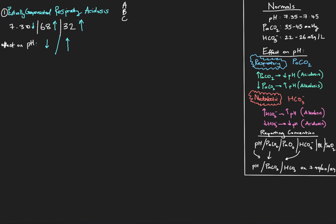This is a partially compensated respiratory acidosis. The reason it's partially compensated is that yes, there's been movement of the bicarb increasing outside of normal range, increasing the pH, trying to pull that pH back to normal — but it hasn't pulled it back all the way into a normal range. This pH is still outside of normal range, so it hasn't fully compensated for this rise in CO2. It's only partially compensated. It's done pretty well to correct the pH close to normal, but not fully, so we call this a partially compensated respiratory acidosis.